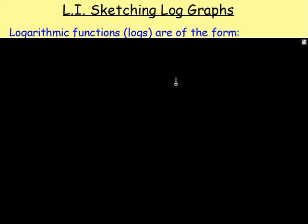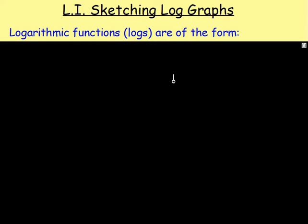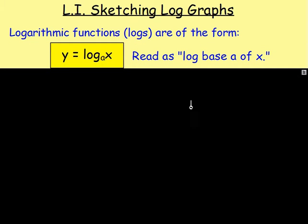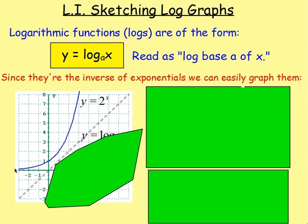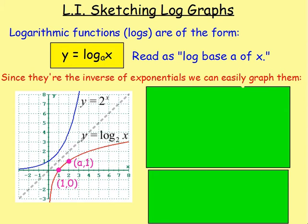Log functions are of the form y equals log base a of x. Since they're the inverse of exponentials, we can easily graph them. Anybody remember how to graph an inverse function? You reflect in the line y equals x. So here we've got this exponential — that is y equals 2 to the power of x. If we reflect over this grey dotted line, which is y equals x, we will end up with our log graph.